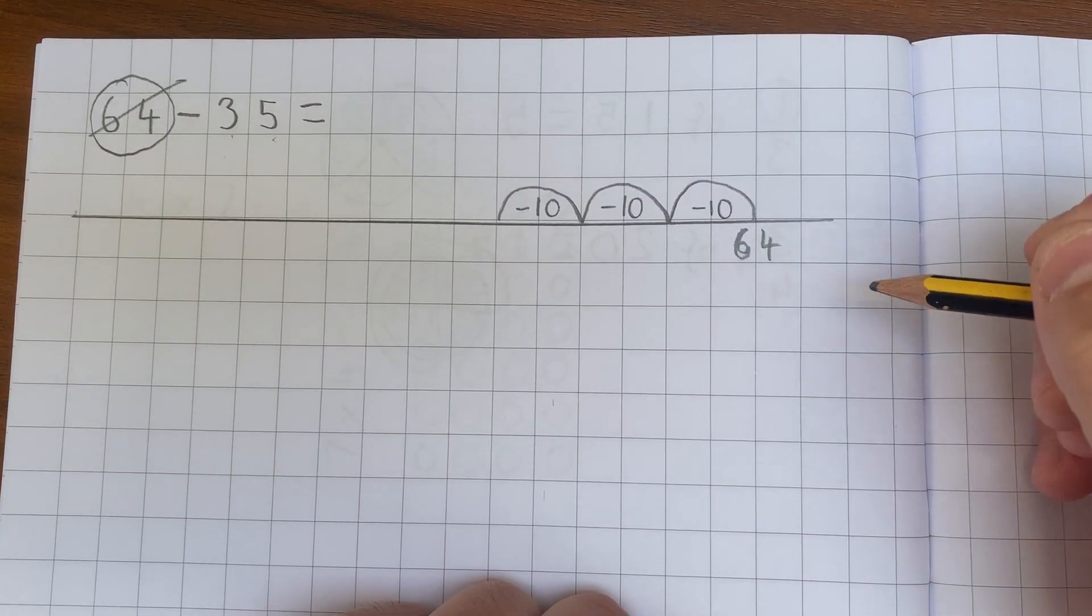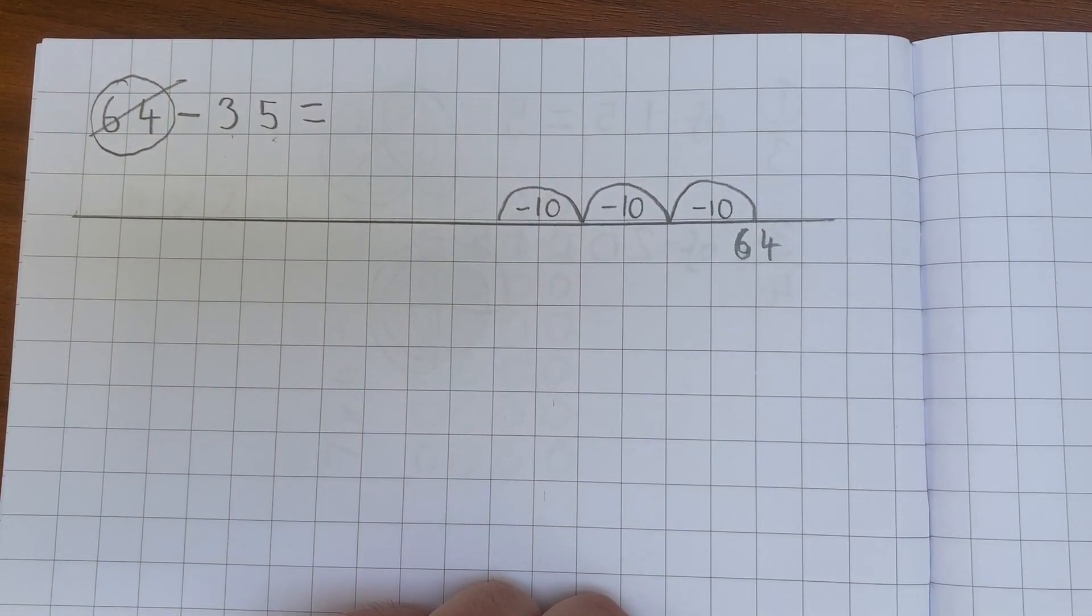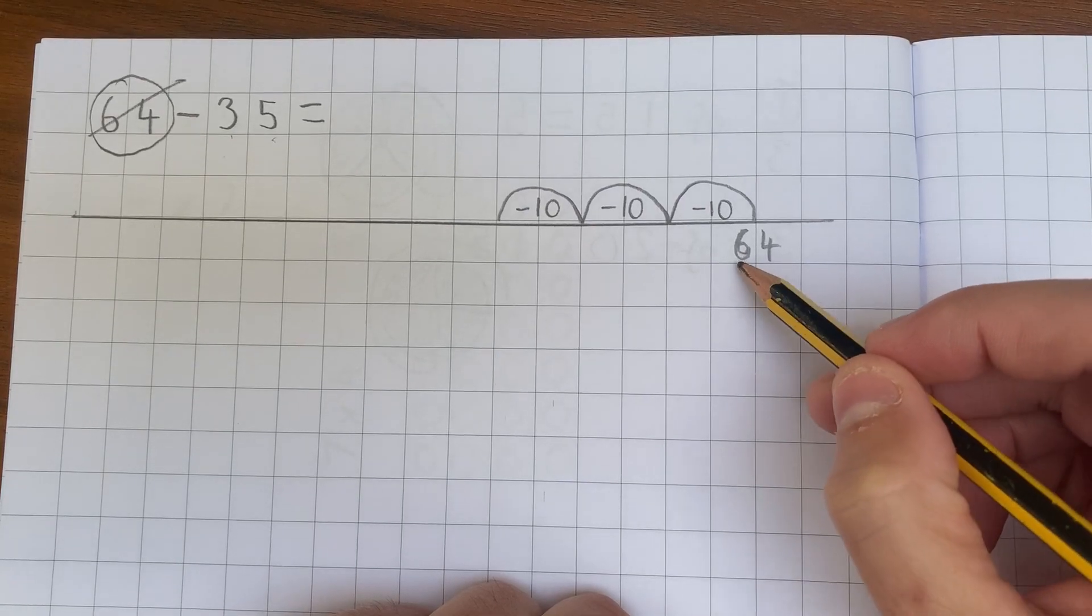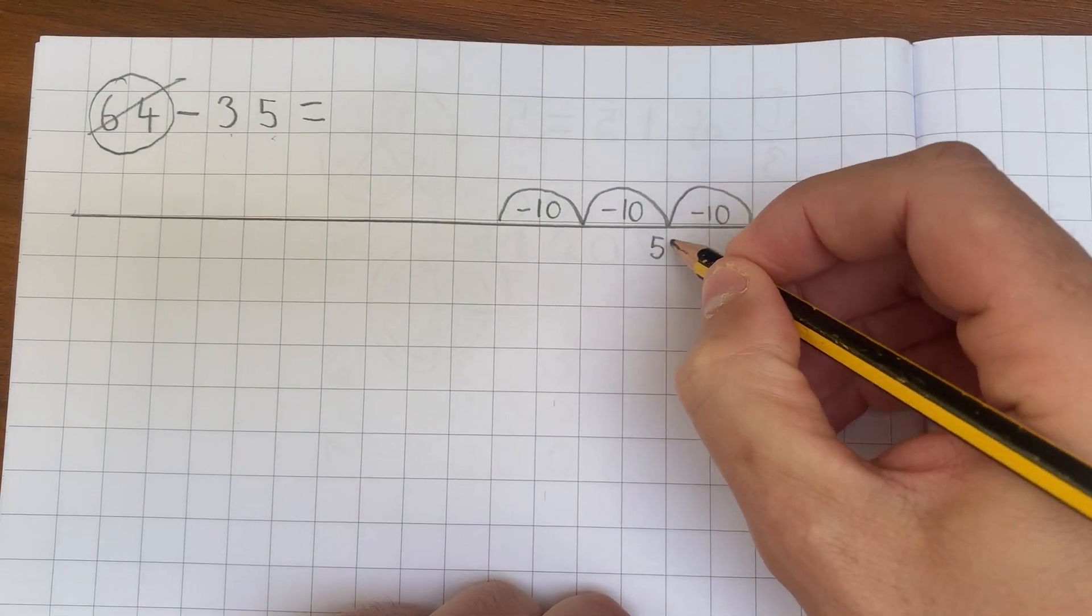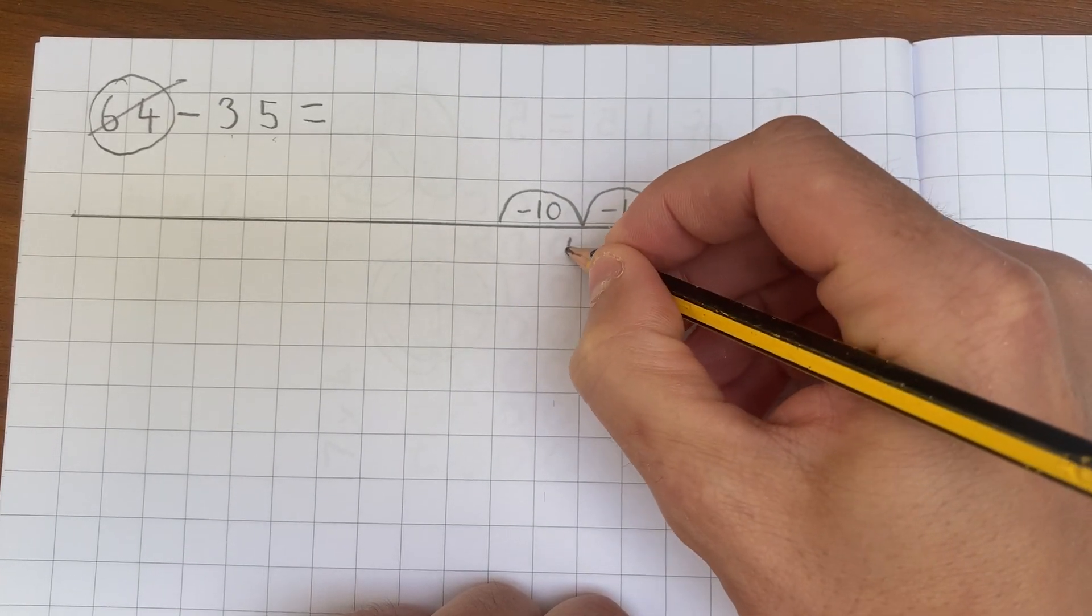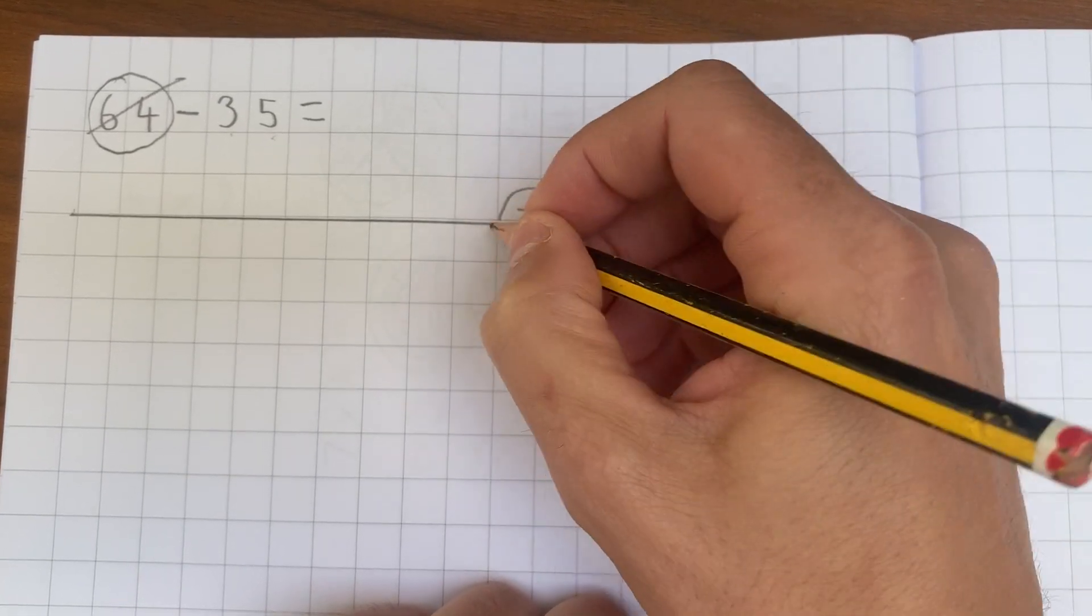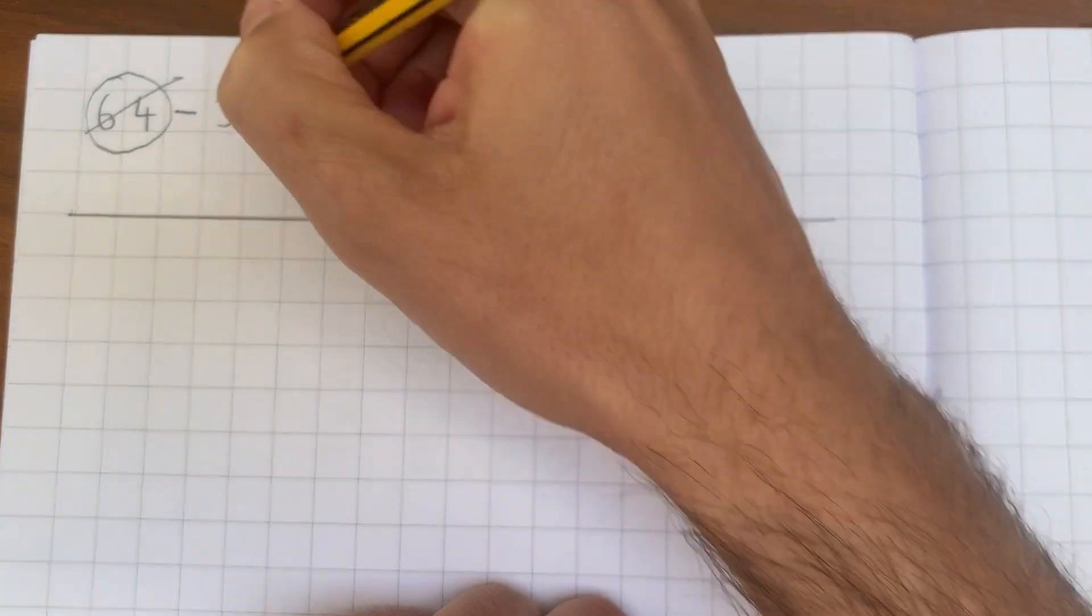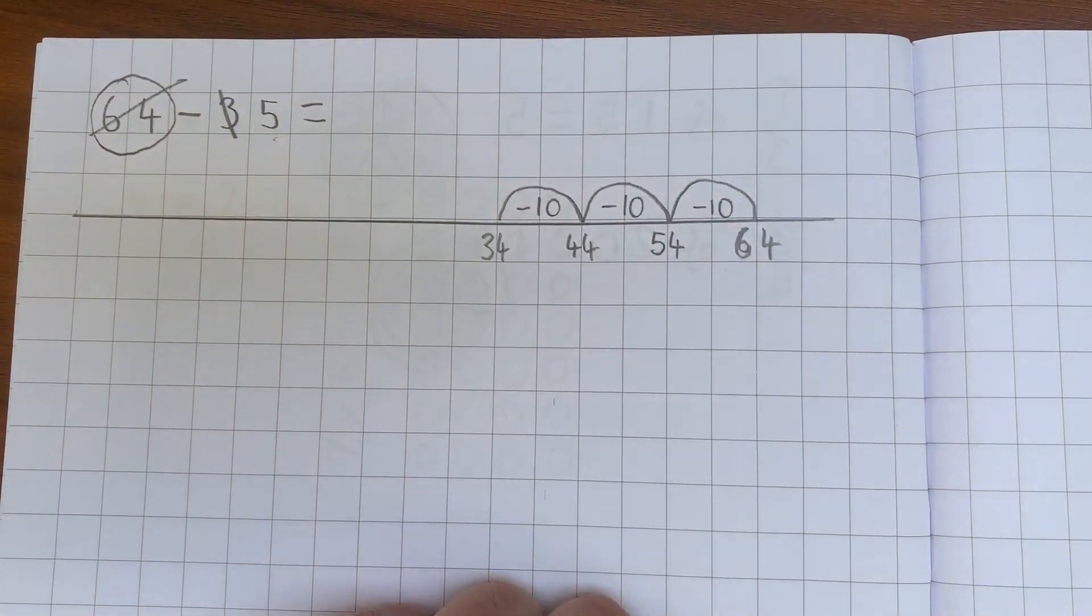This is where it's important to practice counting backwards in tens because that makes this process easier. So I'm going to count backwards now. I've got 64. So I'm going to be 54 underneath this first jump backwards of ten, 44 underneath the next one, and then 34 under this one. So I've taken away now three tens.